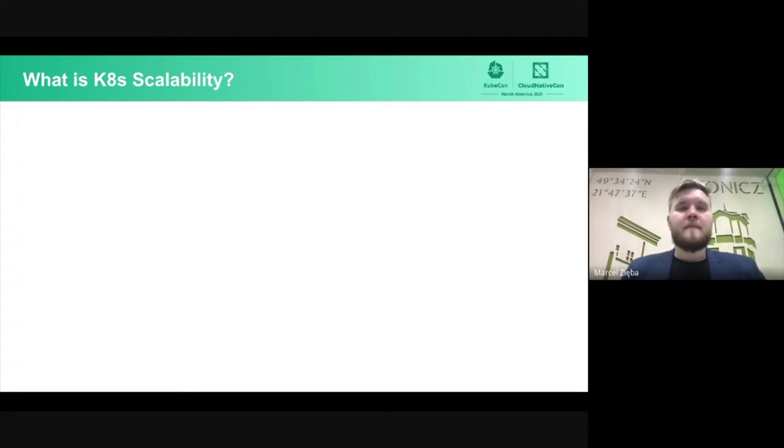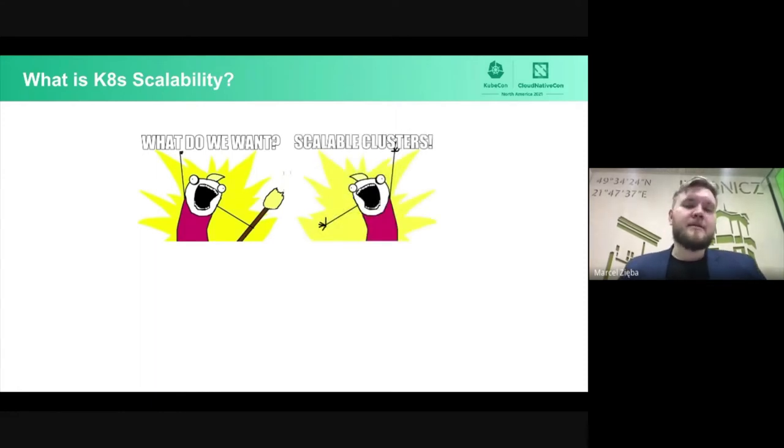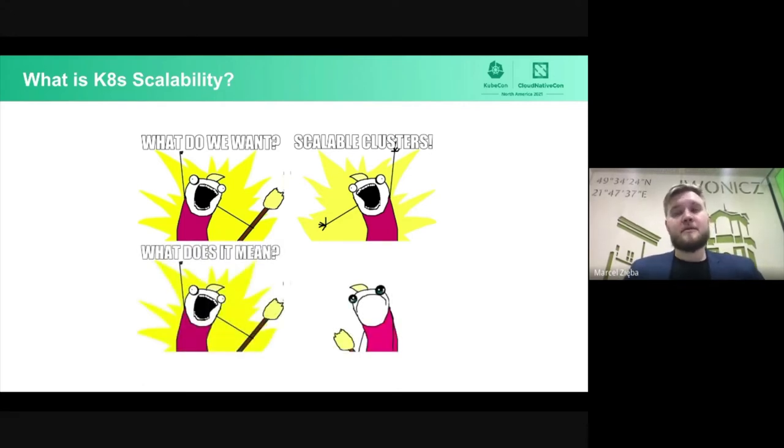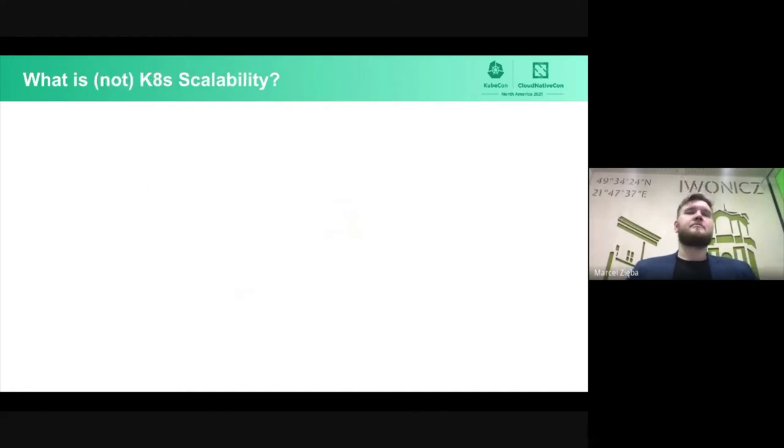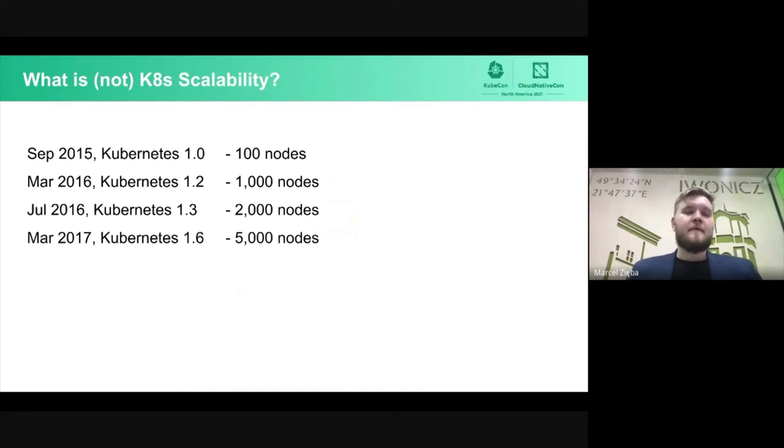We will go through those five different areas during this presentation. So, let's start with defining what actually Kubernetes scalability means. If you ask average user, what do you want in terms of scalability? They will say scalable clusters. But if you ask, what does it mean? Well, most of the users, unfortunately, don't know. So, maybe let's look back at the history of Kubernetes. Kubernetes 1.0 was released in 2015. And officially, it supported 100 nodes. And this number changed over time. It was 1,000 nodes and then in 2017, 5,000 nodes. So, you might ask, how many nodes does Kubernetes support right now? And the answer is that this number didn't change at all. It's still 5,000 nodes.